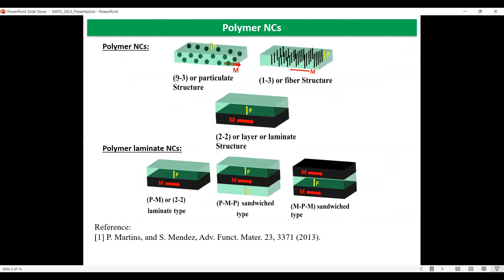There are three types of polymer nanocomposites: the zero-three particulate structure, the one-three fiber structure, and the two-two layer or laminate structure. In the zero-three structure, there is a problem regarding the generation of magneto-electric voltage, as the particles produce less stress. There is also an agglomeration problem. The one-three structure shows better arrangement of the piezomagnetic phase, but there is still a problem of leakage charges.